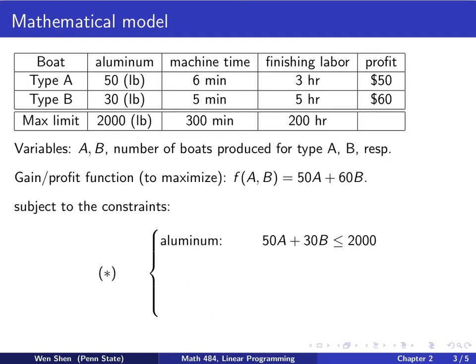For A it's 50 times A, and for B is 60 times B will be our profit. Adding them up is our total profit. So we want to maximize the function F(A,B), but we have constraints. The constraints come from the limit of our resources. Let's list them. For boat A, I will have 50 times A aluminum to use. For boat B, if I produce B numbers of boat, the aluminum I will be using is 30B. So the total consumption of aluminum is the sum of them, and this has an upper bound of 2000. It cannot exceed that amount.